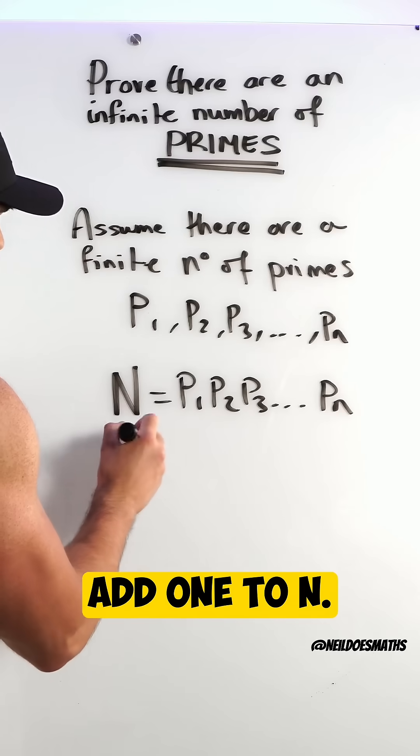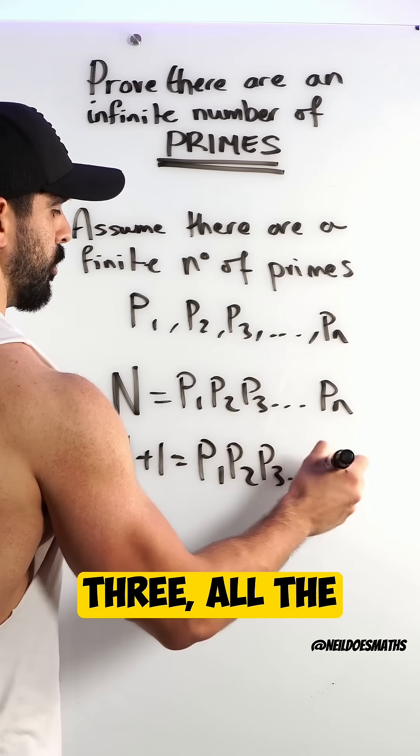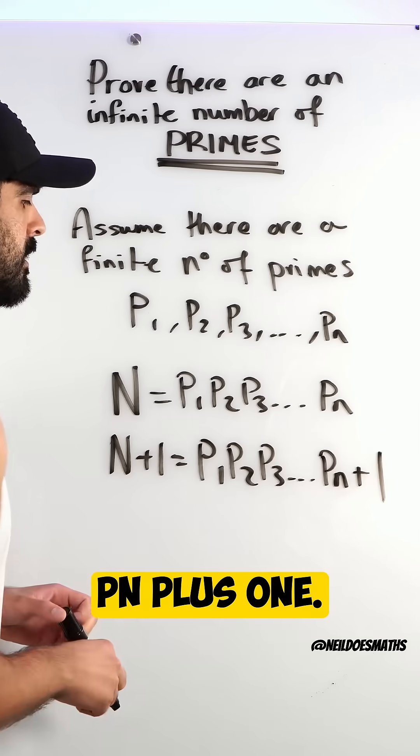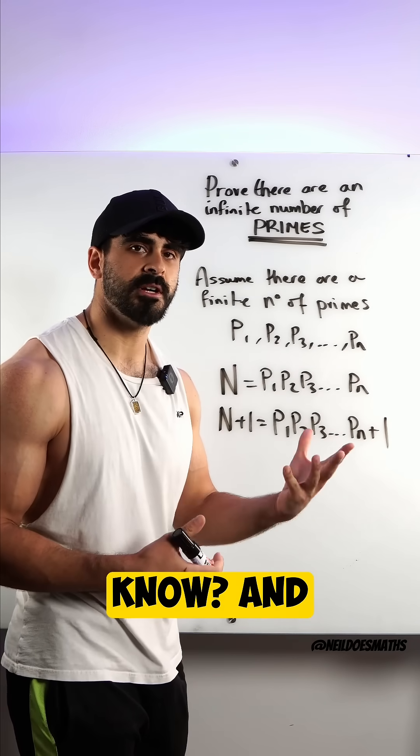But can this be written as a product of the prime numbers that we already know? The answer is no, because if you divide this number by any of the primes we know, we are always left with a remainder of 1.